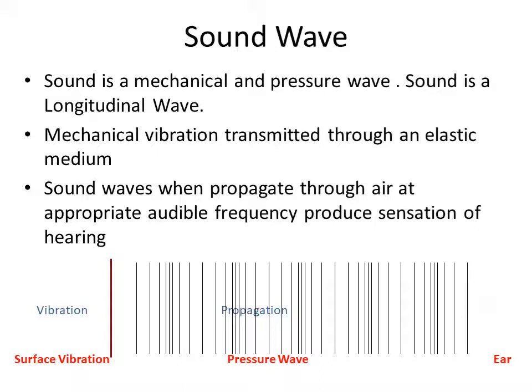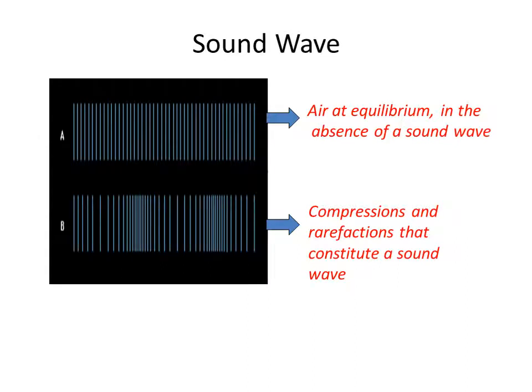When sound travels through the air, it can reach our ears and we hear the sound. This slide shows how sound waves transmit and travel through the air. In the absence of a sound wave, as shown in figure A, air will be at equilibrium. However, in figure B, there is a disturbance due to compression and rarefaction that constitutes a sound wave, and because of this, the sound wave reaches our ears.